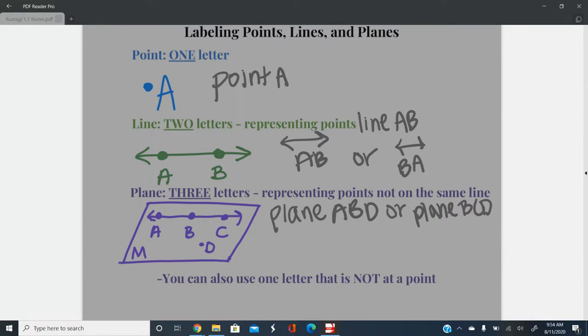You can also use one letter to describe a plane, but that one letter cannot be a point. So if you look at our picture of the plane, you notice that four of the letters have points next to them, and one of them doesn't. So the only one we can use is the one that doesn't. So the last way we can name this plane is by calling it plane M.